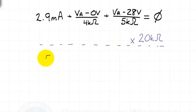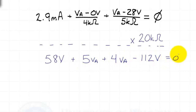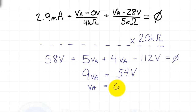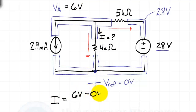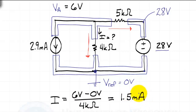To simplify, I'll multiply through by 20 kilohms. We end up with 58 volts plus 5 times VA plus 4 times VA minus 112 volts. This simplifies to 9 VA equals 54, so VA equals 6 volts. If we then wanted to determine the current through the 4 kilohm resistor, we write 6 volts minus 0 volts divided by 4 kilohms, resulting in a current of 1.5 milliamps.